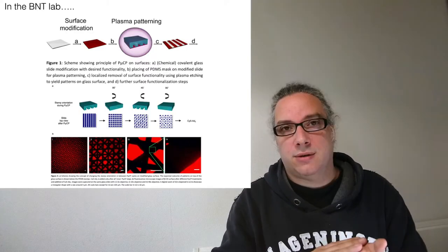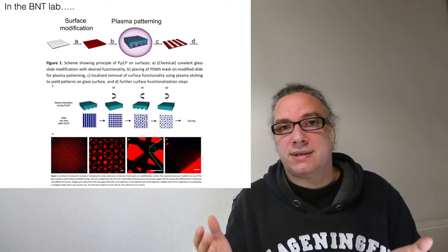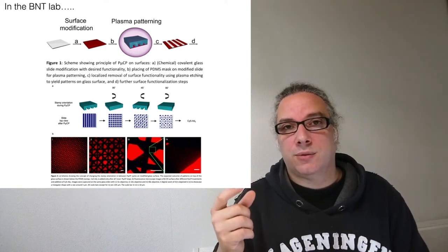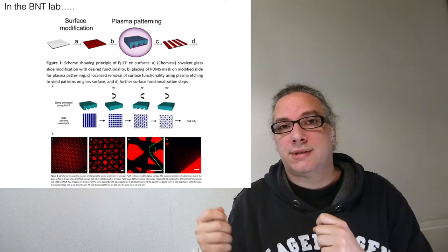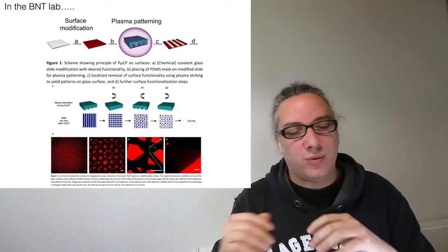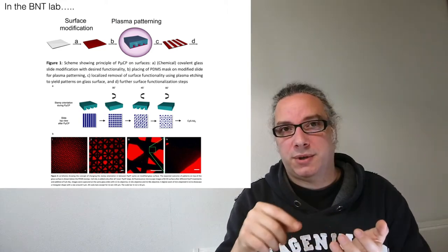In this method, you functionalize the whole glass slide with simple chemistry, and instead of stamping, you use now the PDMS on top for protecting some part of the surface. You put this in a plasma oven. The plasma oven will destroy everything but the things that you protected under the PDMS.